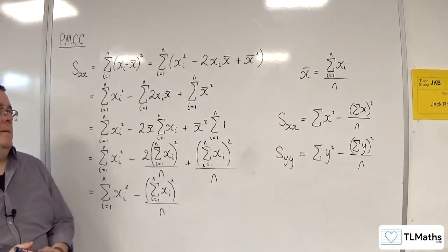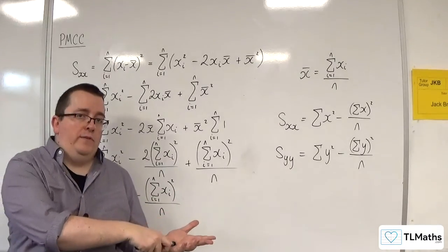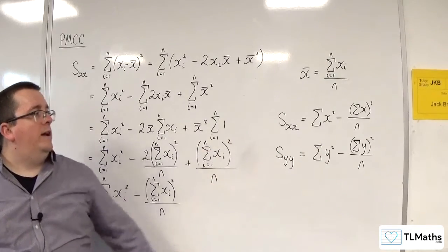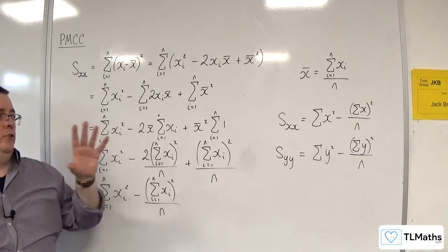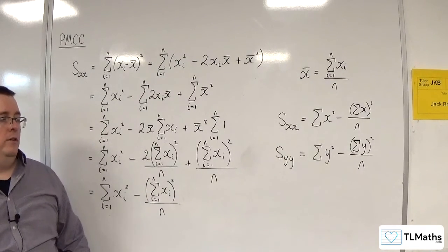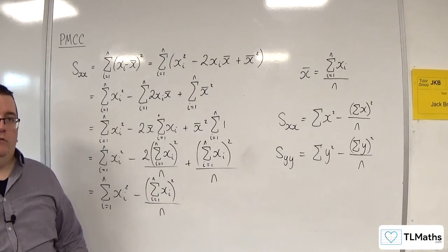So this is how we can get SXY in the previous video, and now SXX and SYY together in summary statistic form to find an alternative version for the product moment correlation coefficient.